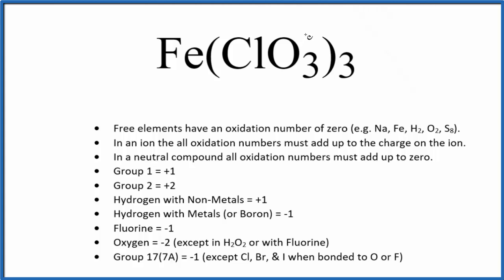Next, if we have an ion, like the chlorate ion here, chlorate ion has an ionic charge of one minus. If we have an ion, all the oxidation numbers add up to the charge on the ion. So all the oxidation numbers here are going to add up to one minus.